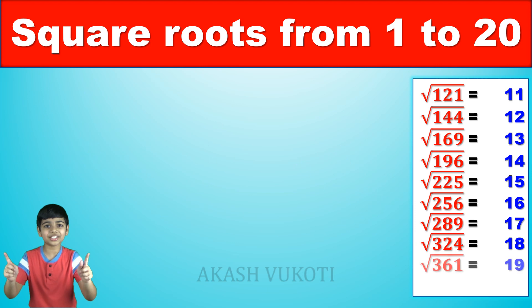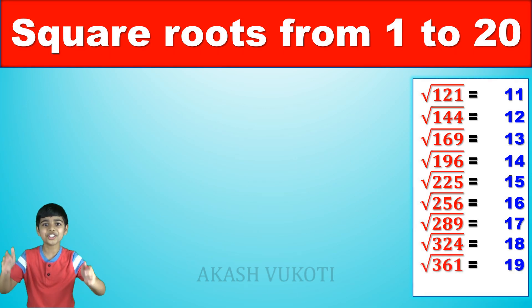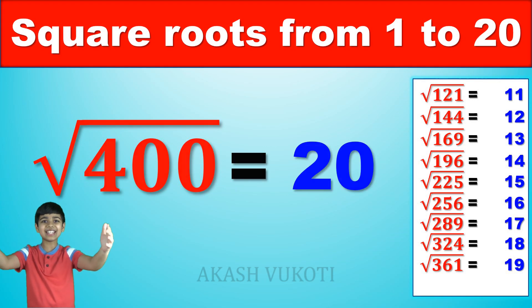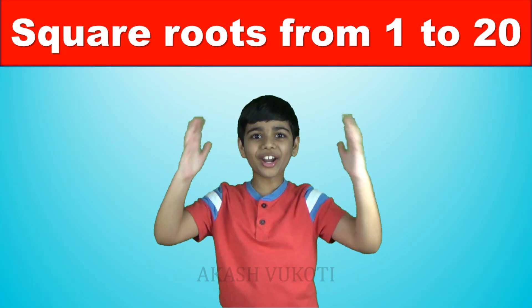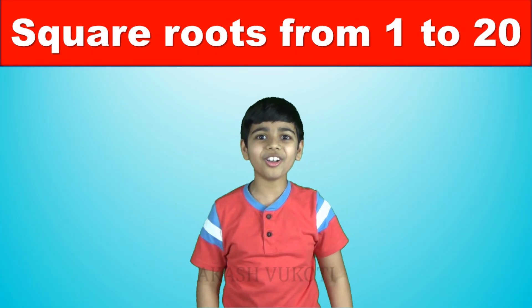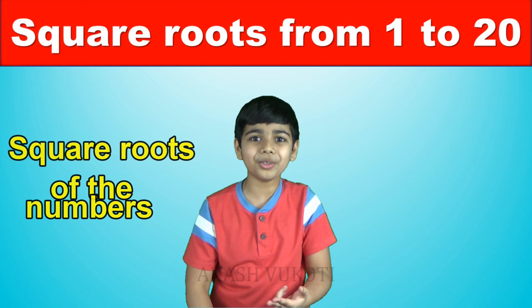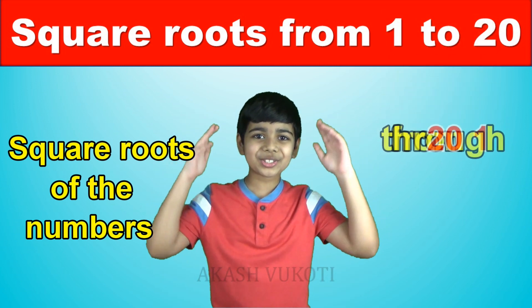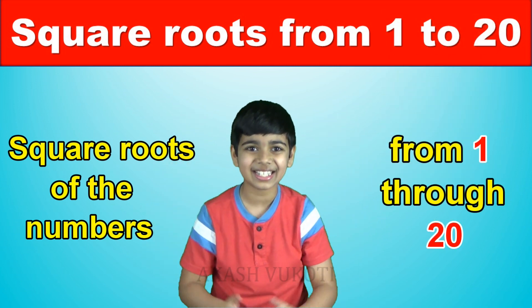And finally, let's do this final one. The square root of 400 is — yes — 20. And there you go. Those are all of the square roots from 1 through 20.